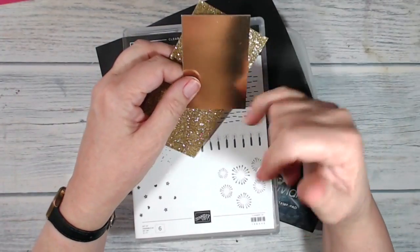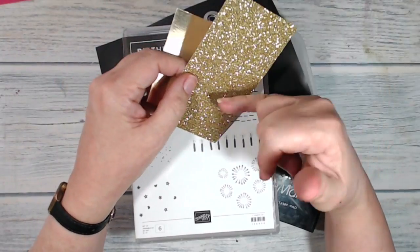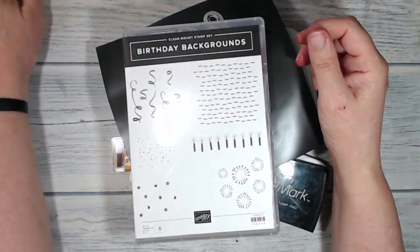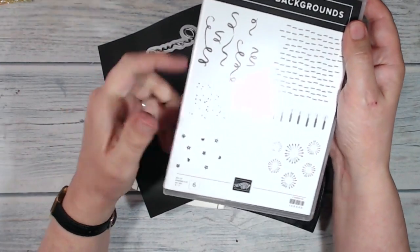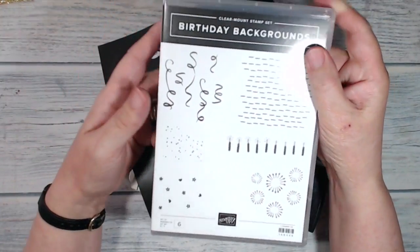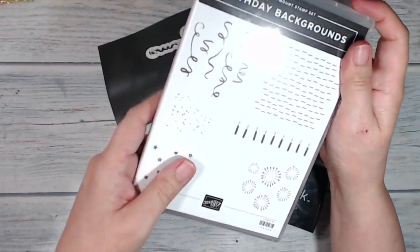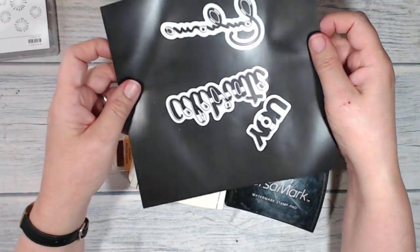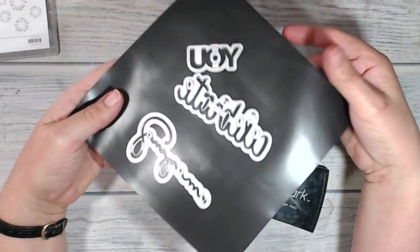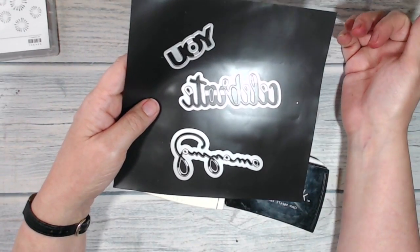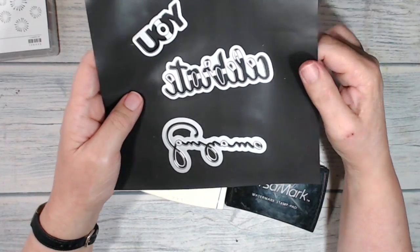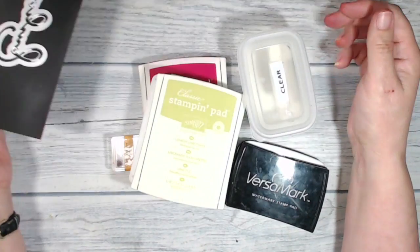I've got some gold foil card and some gold glimmer card. I'm going to be using stamps from birthday backgrounds. This is going to be new in our annual catalog, not long to wait for that now. And I'm also using the celebrate you thinlets, and you might have got these in salebration, but if you didn't, good news, they're going to be on sale in the new catalog.